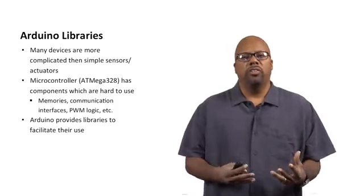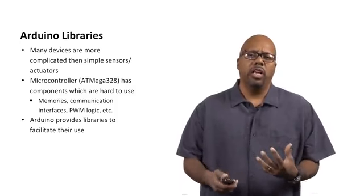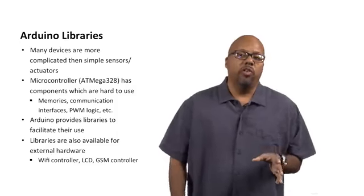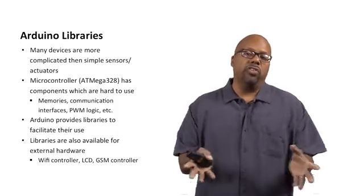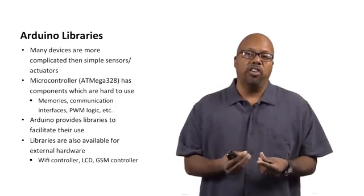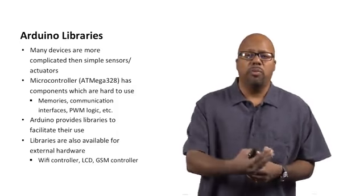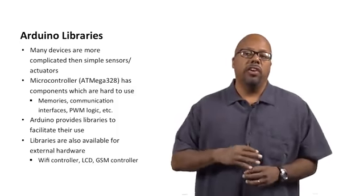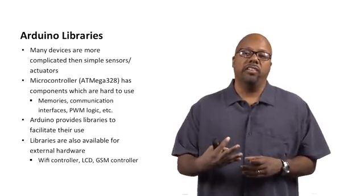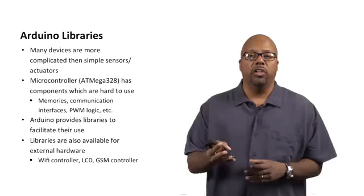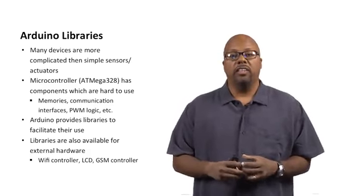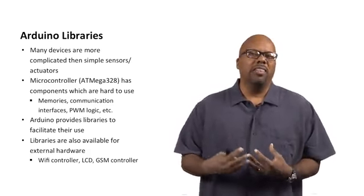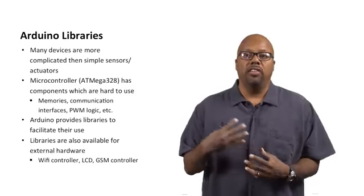The Arduino provides several libraries, and there are also third-party libraries available. Libraries are also available for external hardware — not only are they useful for the hardware on the chip, like a timer or memory built into the chip, but they also help you use other hardware, other chips, other parts that are external to the Arduino that you connect to it. This is in the form of shields, which we'll talk about in the next module. Those also have a set of libraries that allow you to use them, because otherwise it's fairly complicated to use them. Libraries make things much easier for you as a programmer.